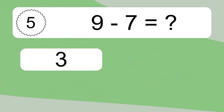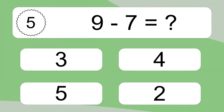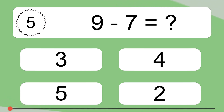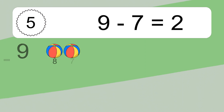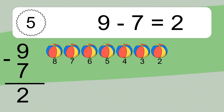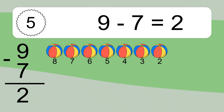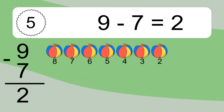9 minus 7 equals 2. Let's count it: 8, 7, 6, 5, 4, 3, 2.